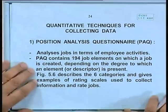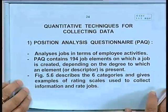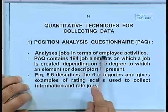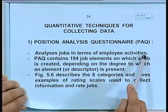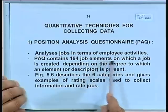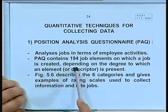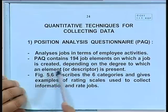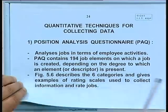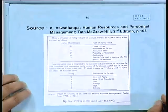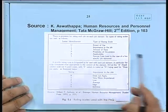Quantitative techniques for collecting data: the Position Analysis Questionnaire, PAQ. This analyzes jobs in terms of employee activities — what are the activities they do is the basis for analysis. PAQ contains 194 job elements on which a job is rated, depending on the degree to which each element — called a descriptor — is present. Figure 5.6 describes the six categories and gives examples of rating scales used to collect information and rate the jobs. If you did a personnel post-graduate course, you would need to be expert in doing the job rating.